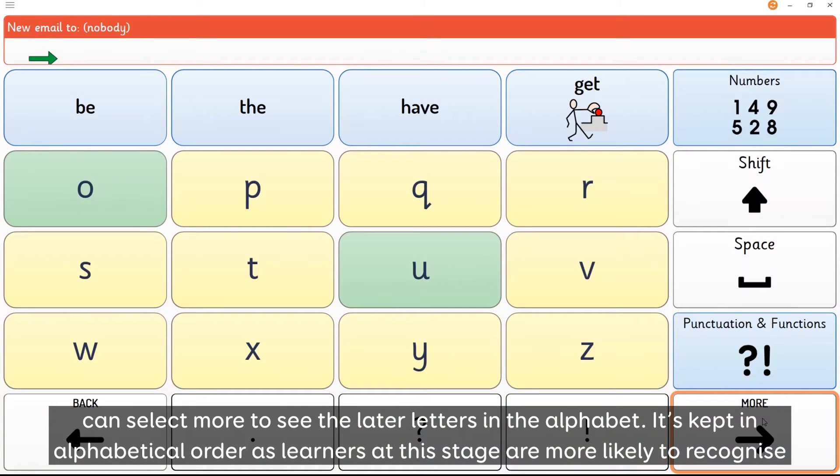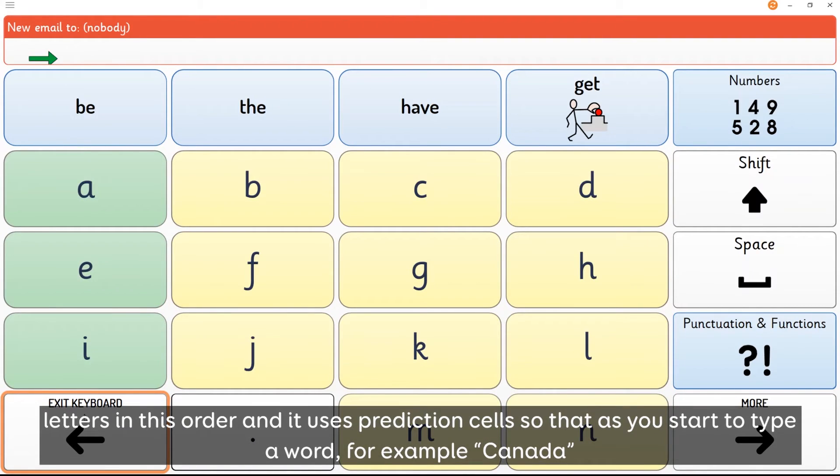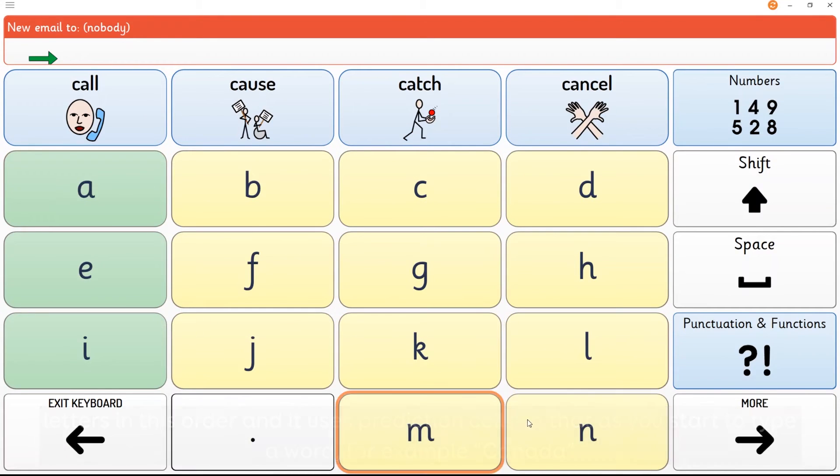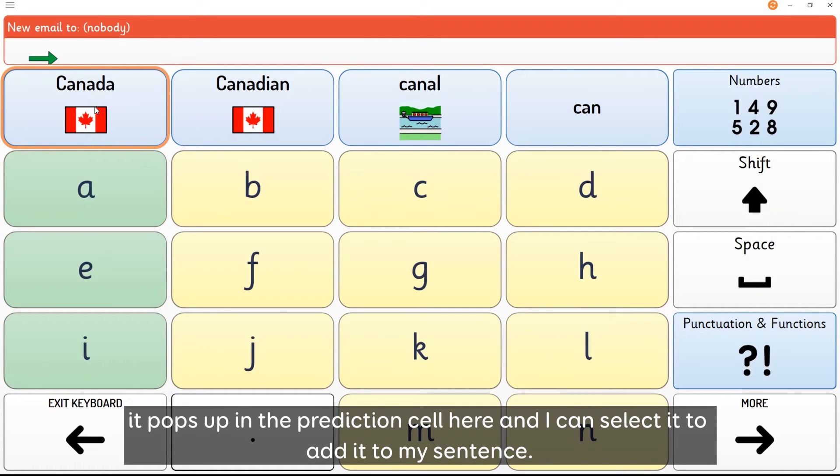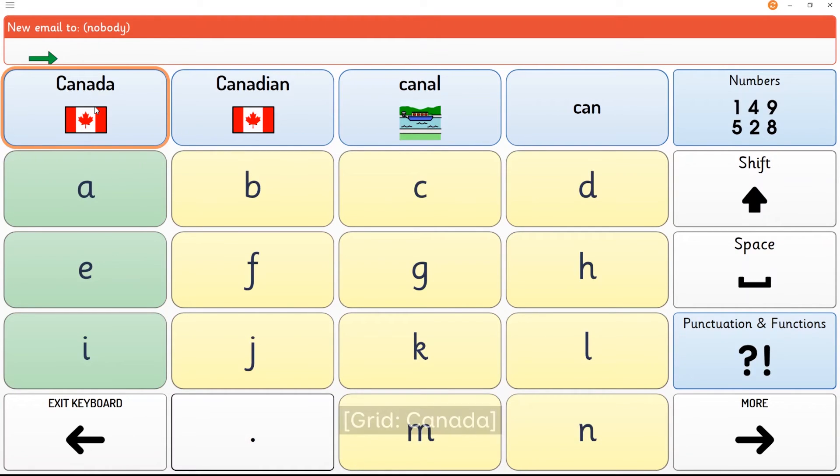You can see it's a split keyboard so the first letters of the alphabet are on this grid and then you can select more to see the later letters in the alphabet. It's kept in alphabetical order as learners at this stage are more likely to recognize letters in this order. And it uses prediction cells so that as you start to type a word, for example Canada, it pops up in the prediction cell here and I can select it to add it to my sentence.